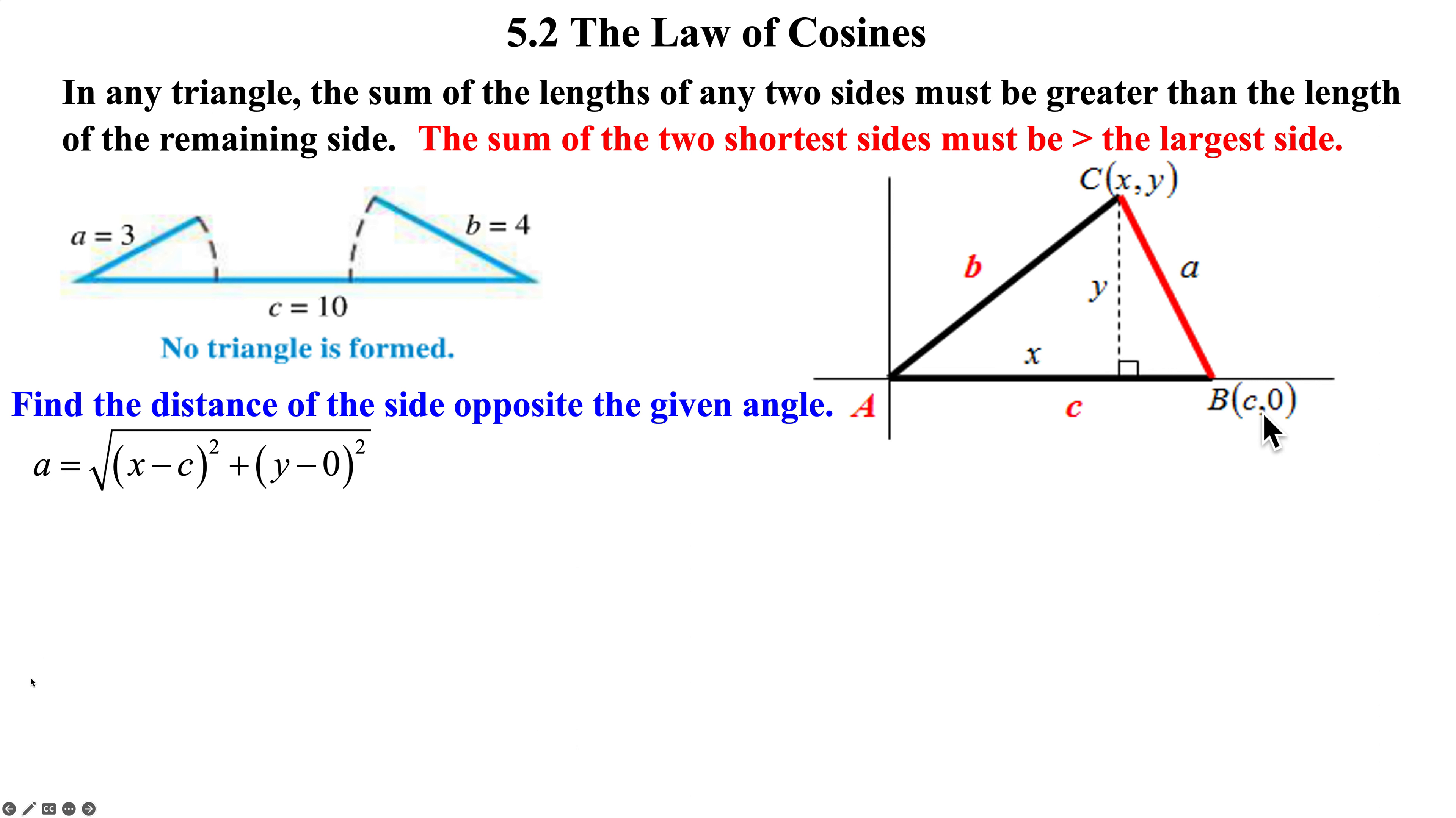So subtract your x's, subtract your y's. Well, I don't want the square root, so we're going to square both sides. And I don't want the parentheses, because I want to do a substitution. I want to work angle A, side B, and side C into my formula. So if I want to do substitutions, I've got to get rid of these parentheses. So this binomial, we're going to foil that out, and we're going to get x squared minus 2cx plus c squared plus y squared.